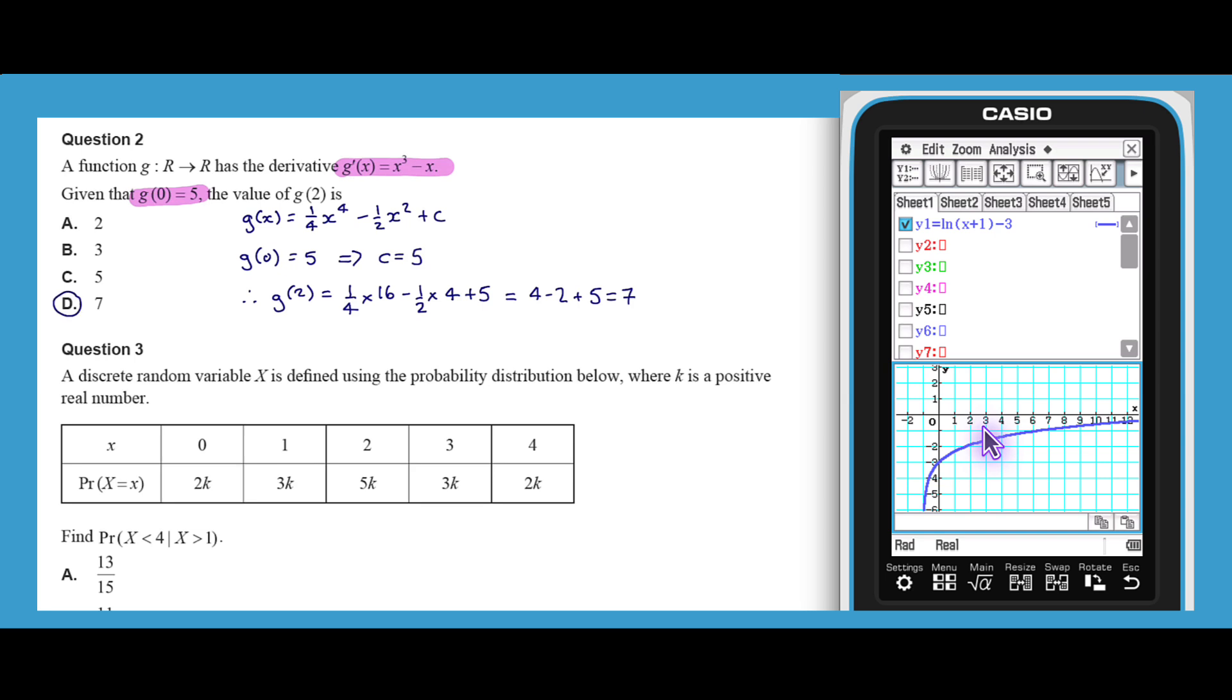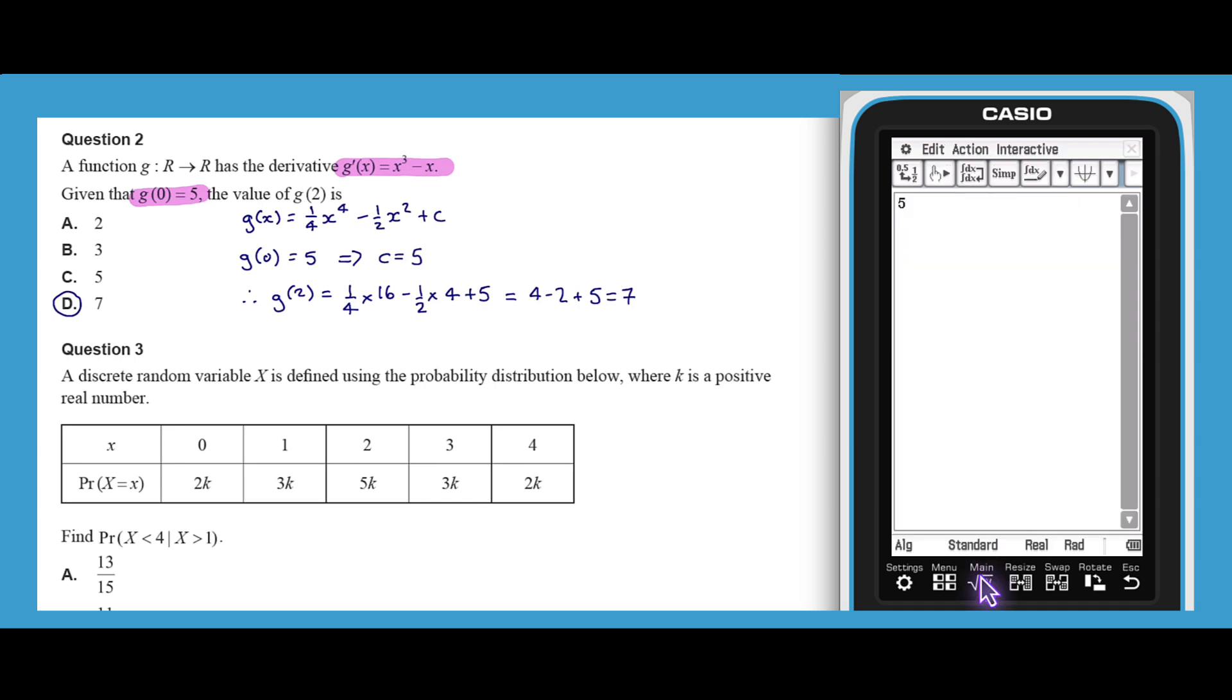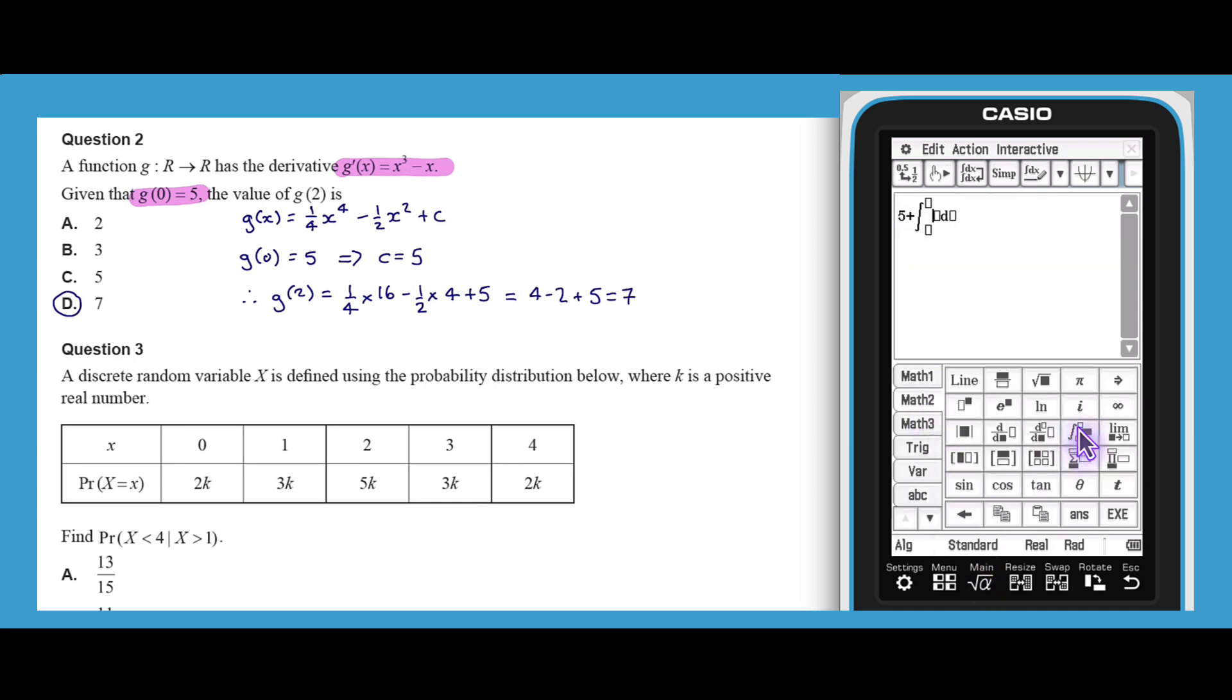And so the answer is D. Another way to find g of 2 is to start with the value of g of 0 and add to it the net change in the function from 0 to 2, which can be found by integrating the rate of change function g dashed x from x equals 0 to x equals 2. I'm going to do this on my class pad. This calculation confirms that the answer is D.